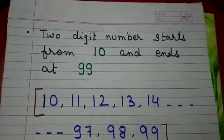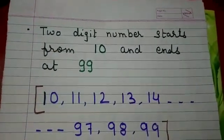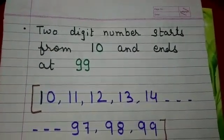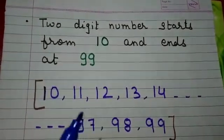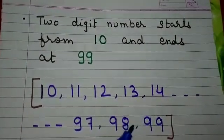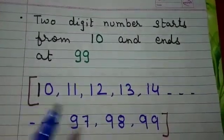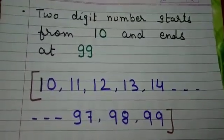Now let's talk about two digit numbers. Two digit numbers start from 10 and end at 99.